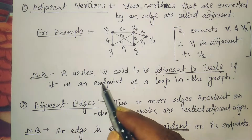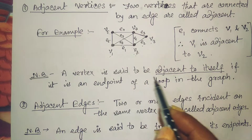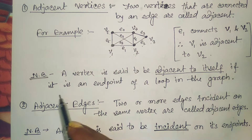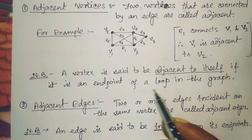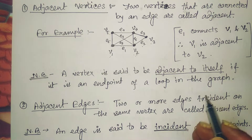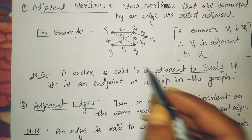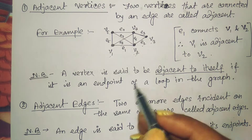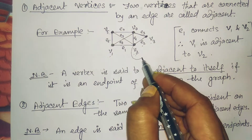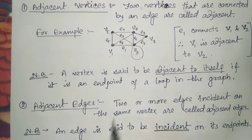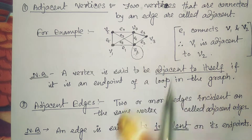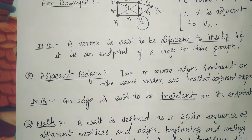A vertex is said to be adjacent to itself if it is an endpoint of a loop in the graph. If a loop exists in a graph, the starting point and the endpoint of that loop are the same, which is why we can say v2 is adjacent to itself.